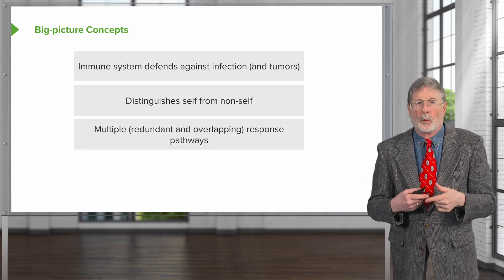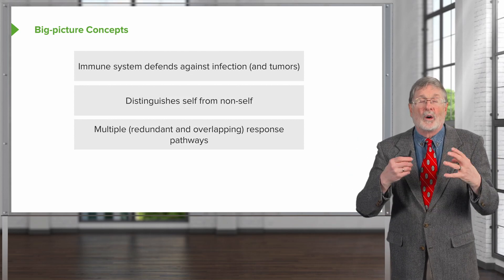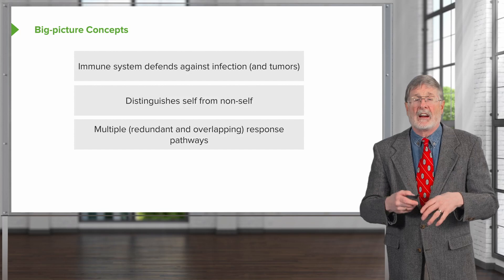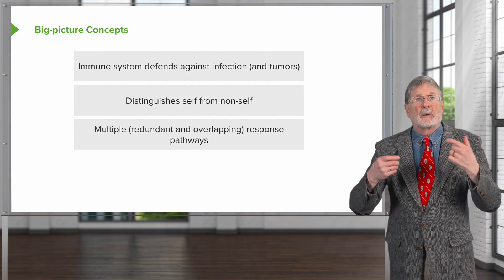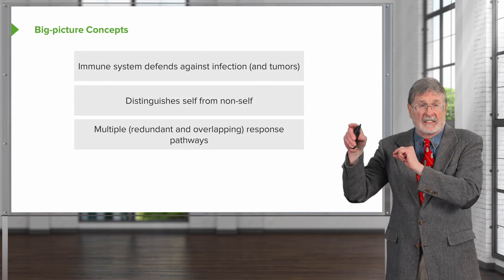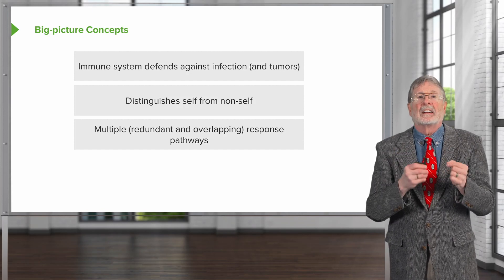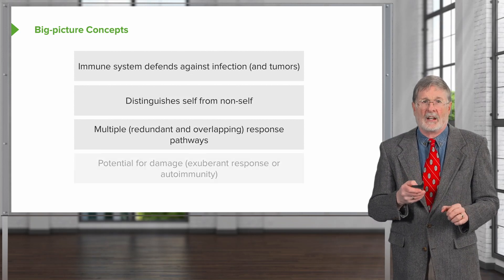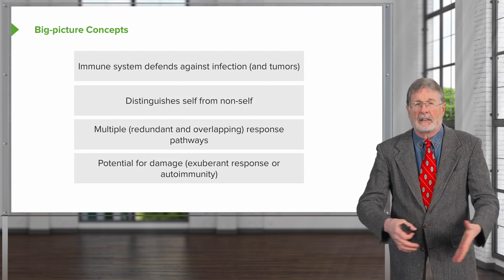Once the immune system is triggered — once it says 'that's not me, I need to respond to that' — it brings to bear a whole host of pathways that allow it to respond and hopefully clear whatever invading army is coming into the system. They are redundant and overlapping, but the responses are many and multiple. Once I provide you, in the next series of talks, a toolkit, you'll be able to predict pretty reliably what is going to happen if I elicit this particular response or that particular response. Their job is to clear, to kill whatever has invaded, and to clear the debris.